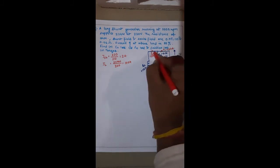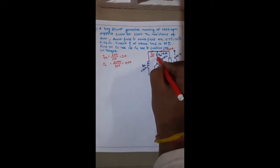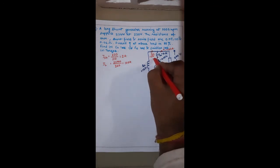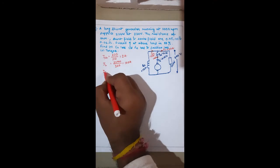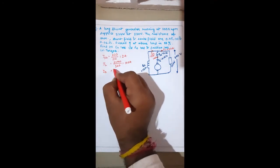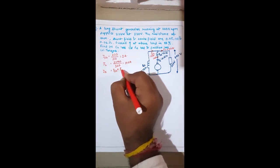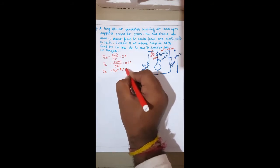Here 100 ampere load current and 2 ampere shunt field current combine, so the armature current Ia = Ish + IL = 2 + 100 = 102 ampere.